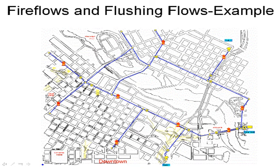Hi, I want to illustrate some additional very important calculations for water utilities that are easily made with PIPE 2000. These deal with hydrant flows, and this picture shows a series of hydrants. Most systems will of course have more hydrants than this, but this is to illustrate the types of calculations that we can easily make.